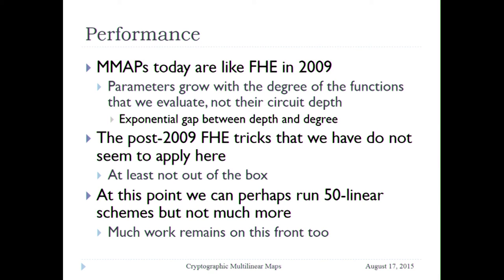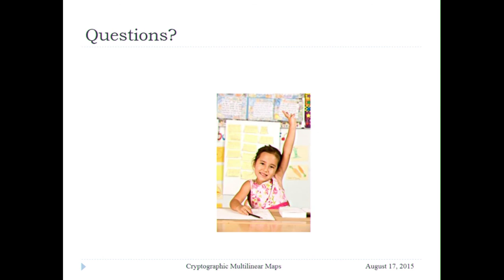Maybe we can evaluate 50 multilinear levels with realistic parameters, or 30, or 20 — that's the range where we can hope to actually run it and finish before next Crypto. It seems a little too early to worry about concrete instances — we don't understand enough about security to worry about whether they run in an hour or a month. We need better confidence in the security. The thing I would like people who do cryptanalysis to focus on is finding distributions on inputs where it's unsafe to use these cryptosystems. And with that, I'm done — thank you very much.